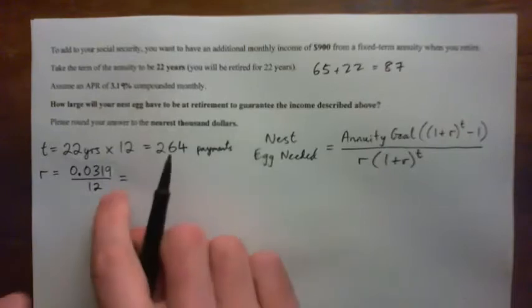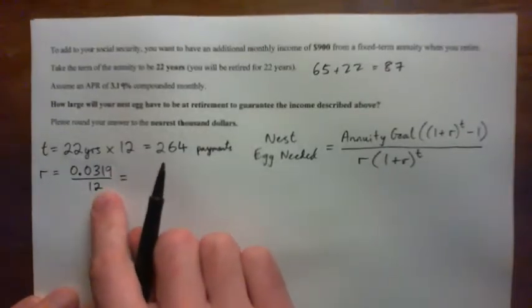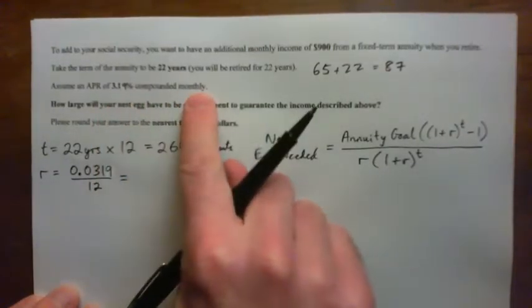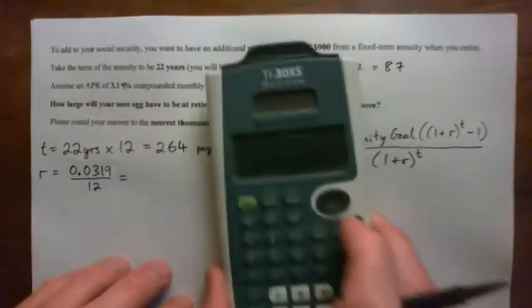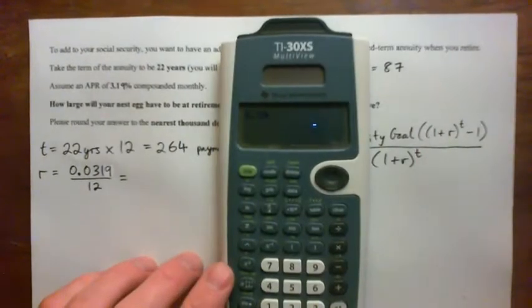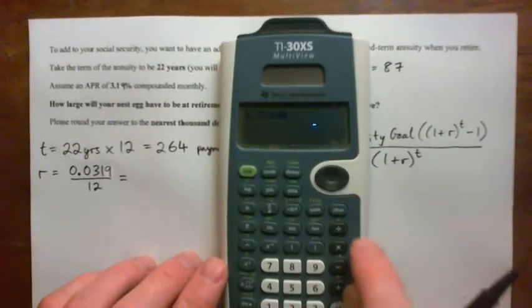So, the rate is 0.0319 over 12. We've got to get the monthly interest rate. So we take the annual percentage rate divided by 12. And let's see what that gives. 0.0319 over 12 and it gives this number.